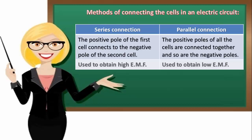Parallel connection: the positive poles of all the cells are connected together, and so are the negative poles. Used to obtain low EMF.